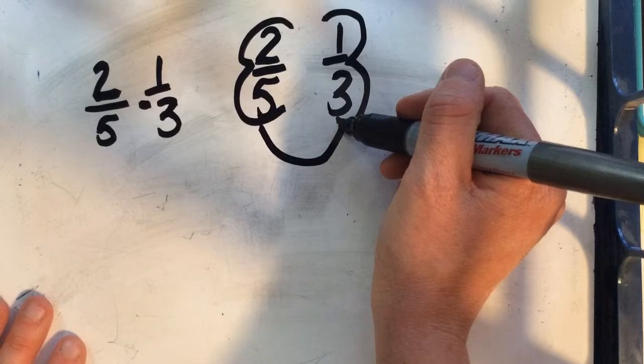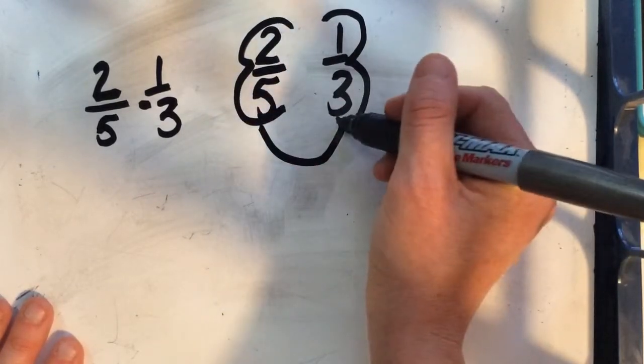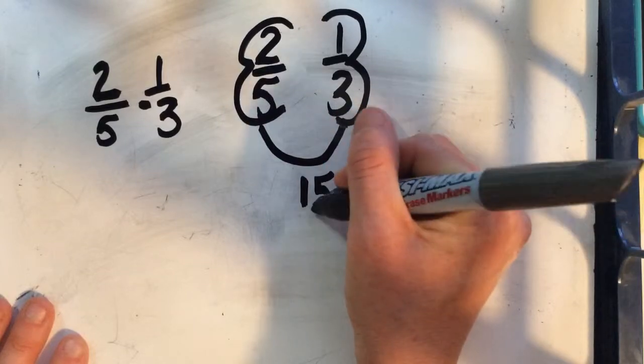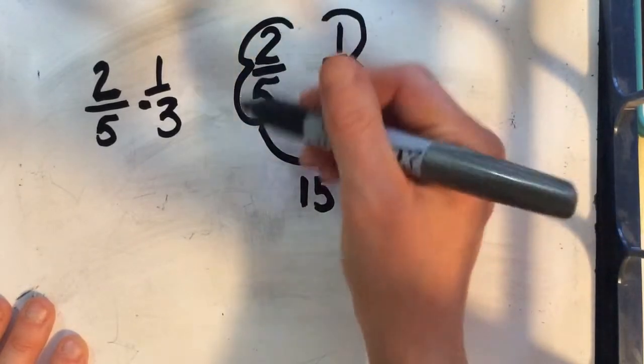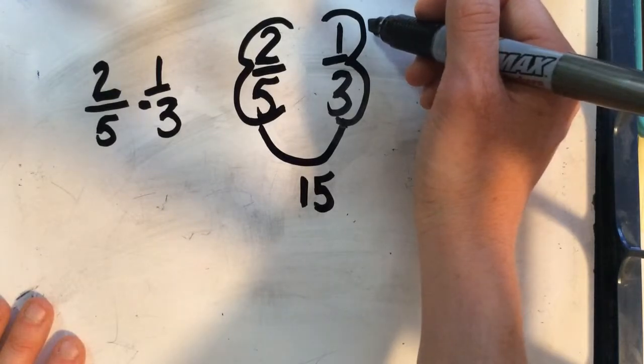But I know five times three is 15. Now, I'm going to multiply across the wings to get my numerators so I can make equivalent fractions.